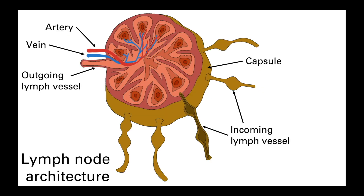The lymphatic system is not just returning fluid to the blood — it is also helping check that your body doesn't have any pathogenic invaders, and this is the function of the lymph nodes. Multiple afferent, or incoming, lymph vessels can feed into a single lymph node, which is surrounded by a protective capsule. The lymph fluid enters the sinuses of the node, which are lined by macrophages and dendritic cells that sample the lymph for the presence of any potential pathogens. Lymph leaves the nodes via the efferent, or outgoing, lymph vessel.